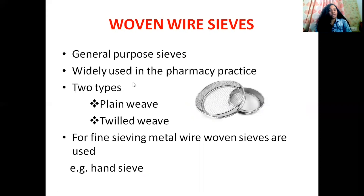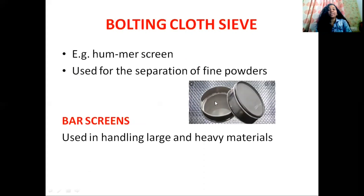There are two types of woven wire sieves: plain weave sieve and twill weave sieve. These metal wire sieves are used for fine sieving — for example, hand sieve.